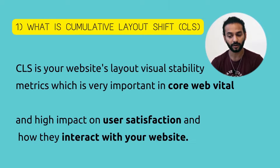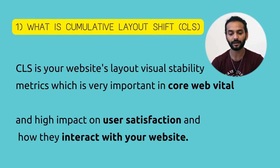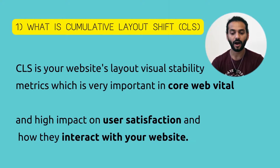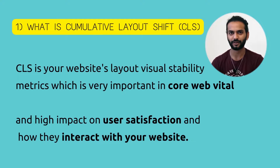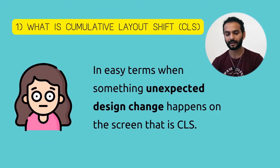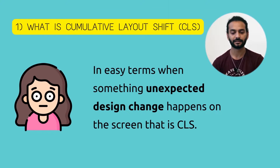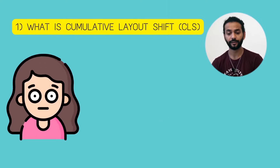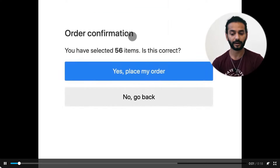CLS is your website's layout visual stability metric, which is very important in Core Web Vitals and has a high impact on user satisfaction and how users interact with your website. In easy terms, CLS is when something unexpected design change happens on the screen.